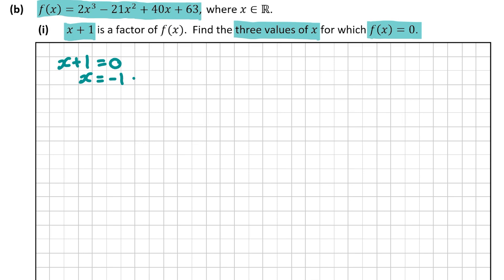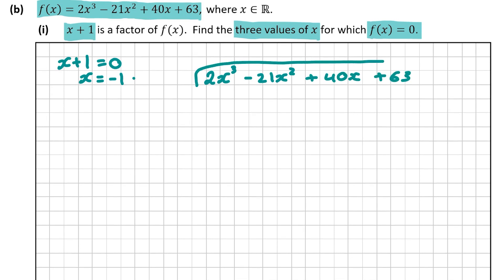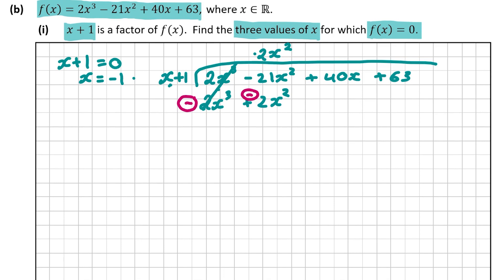We're going to get a quadratic of the form: something x squared plus something x plus a constant, and then factorize that to find two more values of x. So we have 2x to the power of 3 minus 21x squared plus 40x plus 63, divided by x plus 1. x into 2x cubed is 2x squared. 2x squared multiplied by x is 2x cubed; 2x squared multiplied by 1 is plus 2x squared. We change the signs to cancel the 2x cubed. Minus 21x squared minus 2x squared gives minus 23x squared.